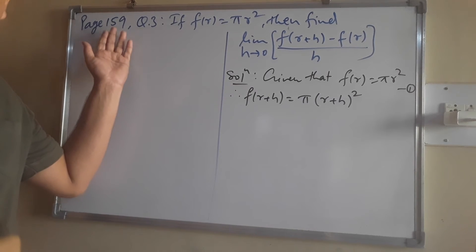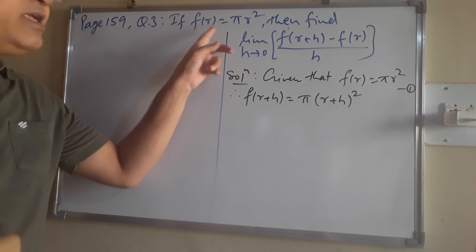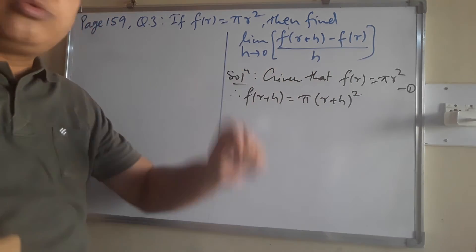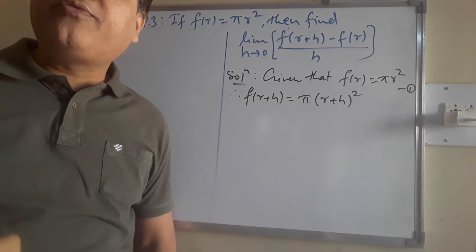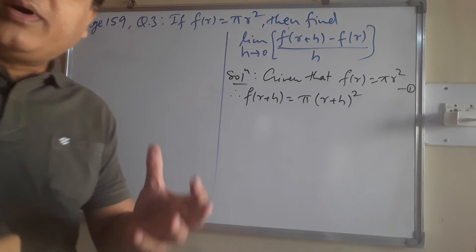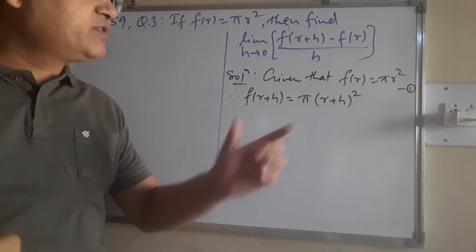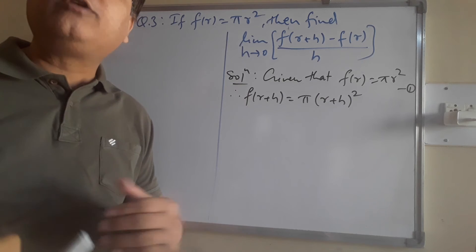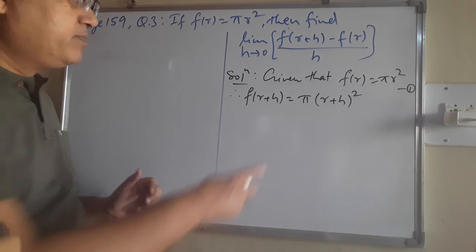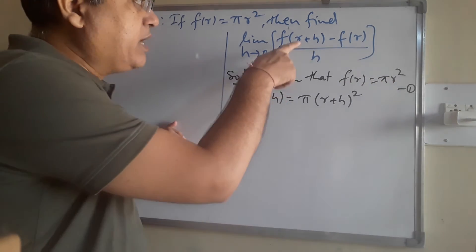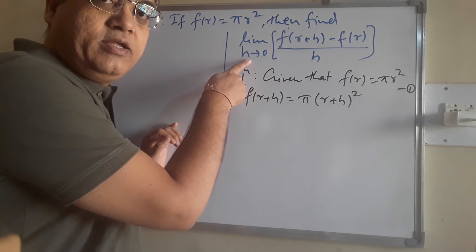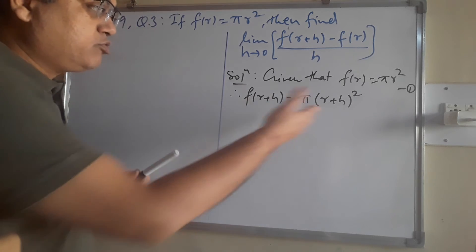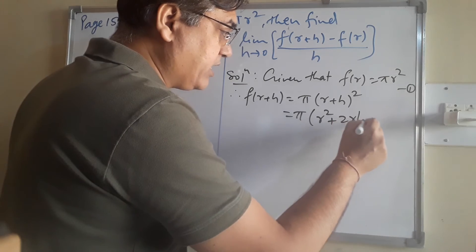Next question: page 159, question number 3. If f of r equals pi r squared, then find the limit of [f(r plus h) minus f(r)] upon h as h tends to 0. This is related to the next chapter, Chapter 9, where standard derivative formulas are found by evaluating exactly such limits. So this problem serves as an introduction to the next chapter.